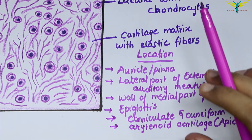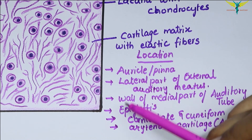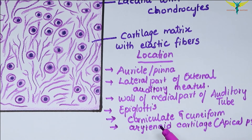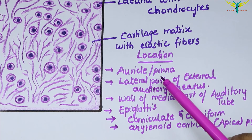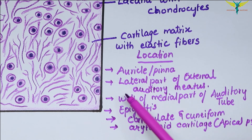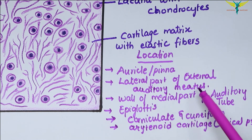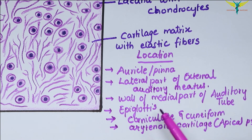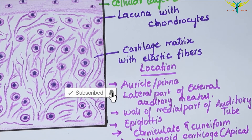All these sites of elastic cartilage are connected either with the production or the reception of sound — during the production of sound near the epiglottis, corniculate, cuneiform, and arytenoid cartilages of the larynx, and during the reception of sound in the auricle, lateral part of the external auditory meatus, and the wall of the medial part of the auditory tube.